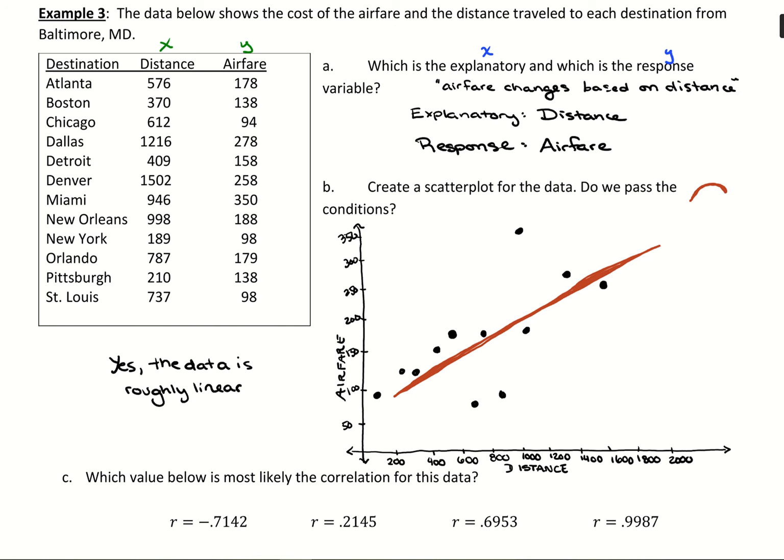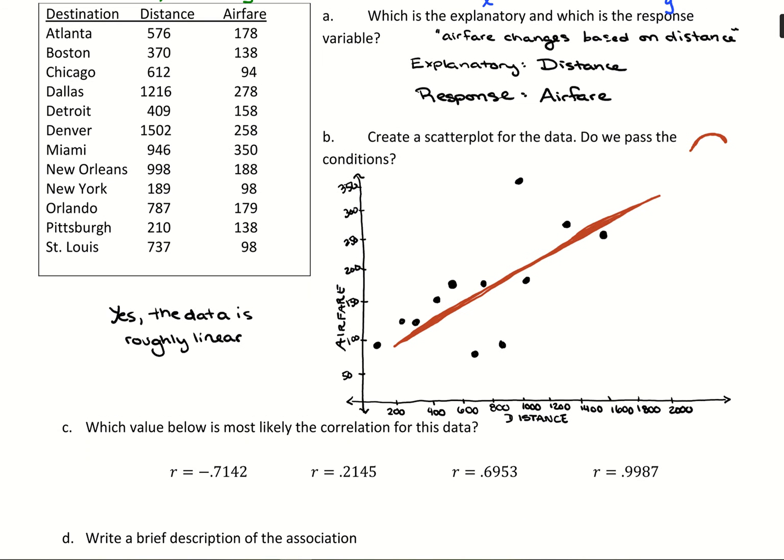When I draw that line, what I should notice is that it has a positive slope. You have this increasing trend, which makes sense for data - the further you travel, the higher the airfare you would pay typically. So we know it's positive. This negative 0.7142 can't be a possibility because we should have a positive direction to it.